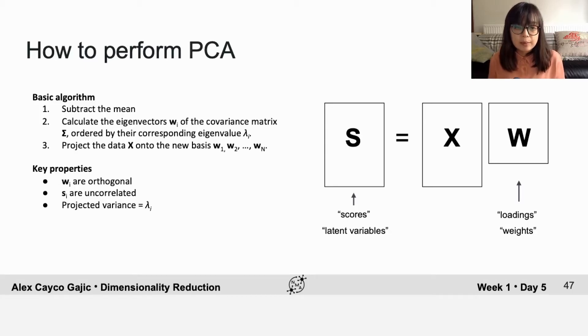The key properties you should always remember about PCA are that the basis vectors wi are orthogonal by construction, the scores si are uncorrelated, and the eigenvalues lambda i are equal to the projected variance. So now it's your turn to perform PCA on your bivariate Gaussian data.